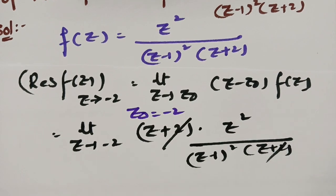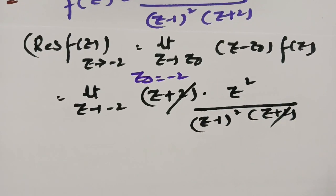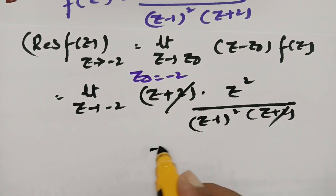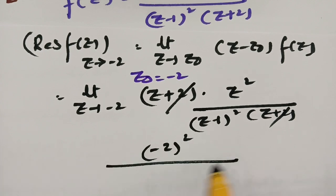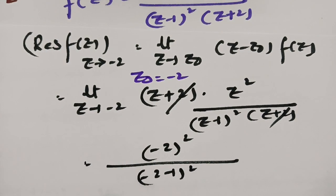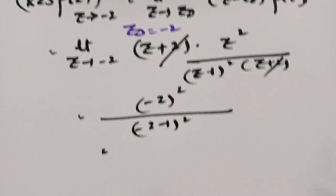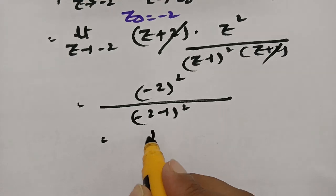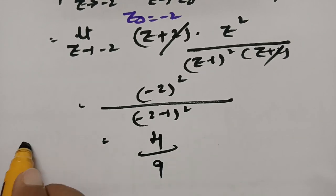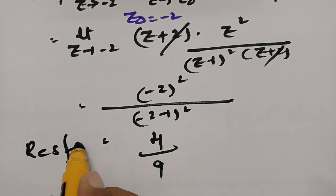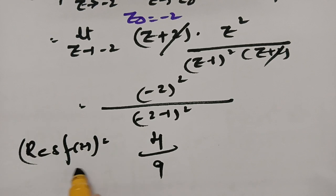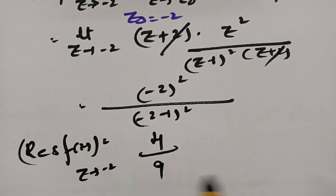Cancelling (z+2) and substituting z = −2: (−2)² / (−2−1)² = 4 / (−3)² = 4/9. So the residue of f(z) at z = −2 is 4/9.